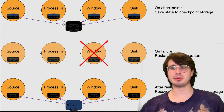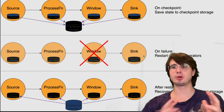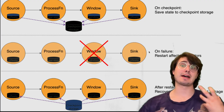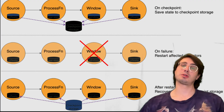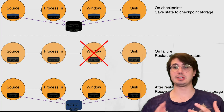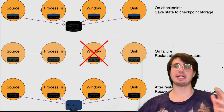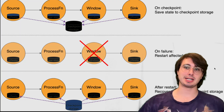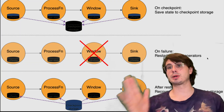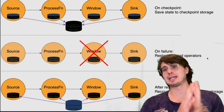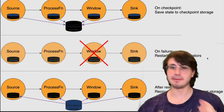The checkpointing interval should balance between recovery time objectives (RTO) and performance overhead. Short intervals mean constantly taking checkpoints, so much faster recovery but higher overhead. Longer intervals reduce overhead since you're not making so many checkpoints, but introduce increased potential data reprocessing during recovery, because you can only recover to the last checkpoint — anything that happened after that checkpoint cannot be recovered.